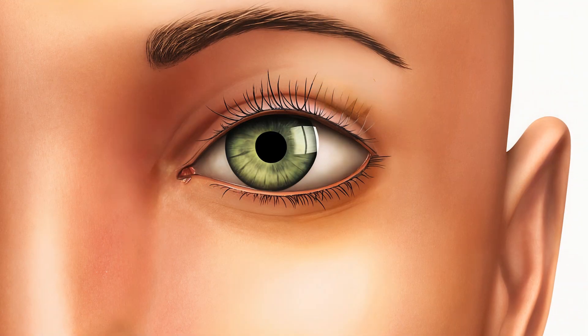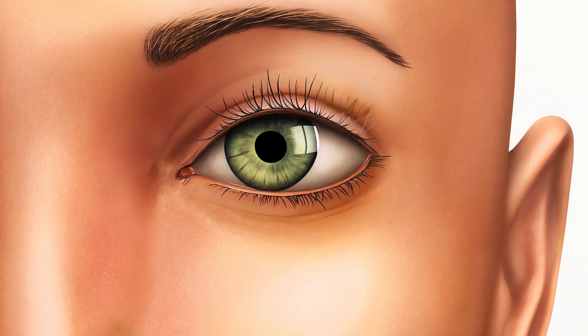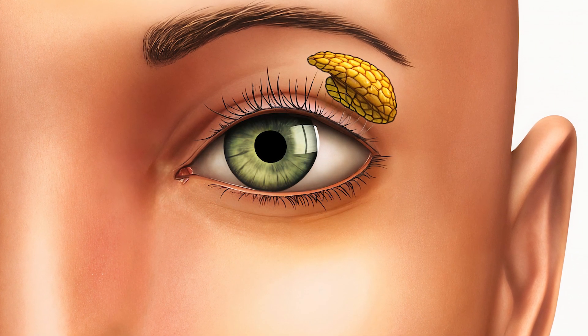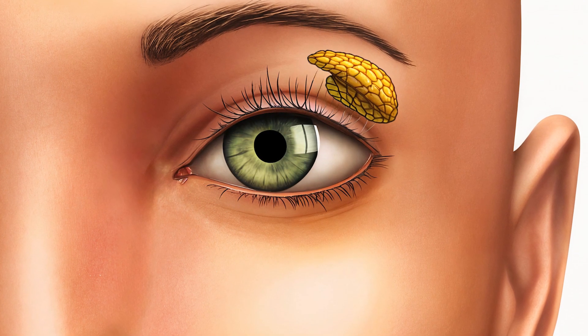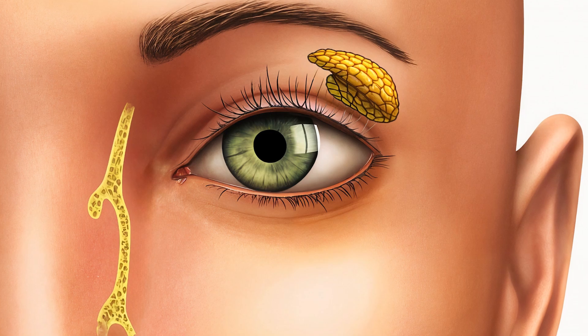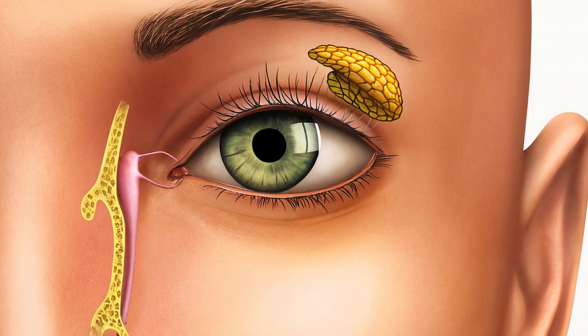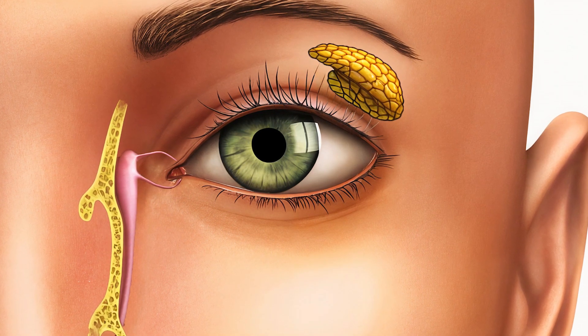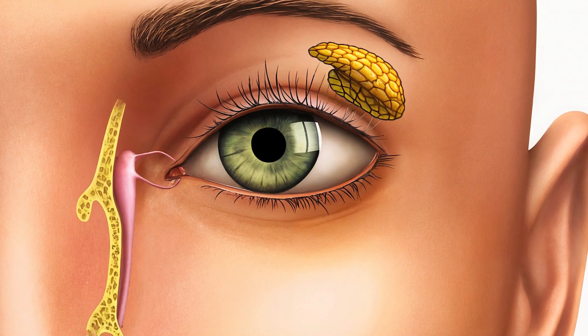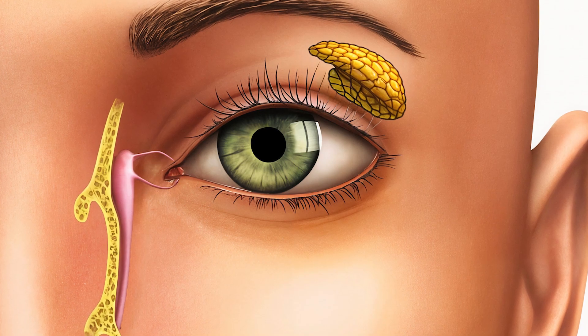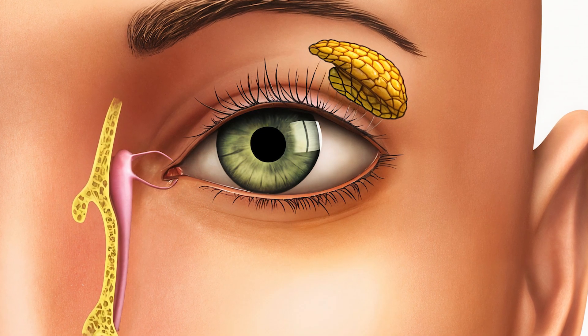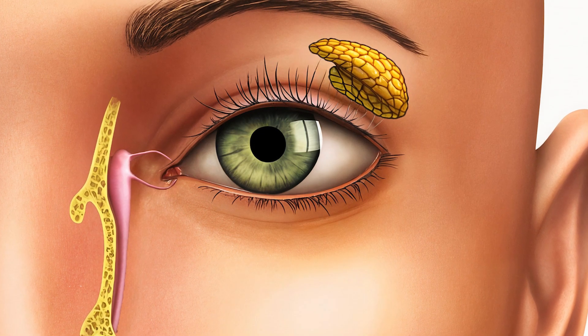The lacrimal apparatus, which includes the lacrimal gland and associated ducts, produces and drains tears, ensuring that the eye remains moist and that the corneal surface stays free from debris and pathogens.